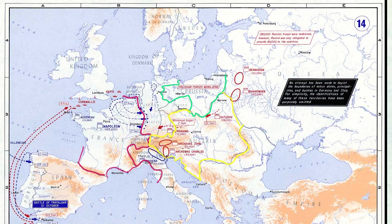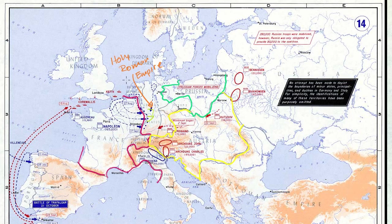A big difference between the world then and now was that there was no nation of Germany. You had a bunch of people speaking German, but they were divided into many small states — some under Austrian control, some under Prussian control. This loose confederation of German kingdoms and states was called the Holy Roman Empire. As Voltaire famously said, they were neither holy nor Roman — they didn't speak Latin, they weren't Italian, they were German. It wasn't controlled by a religious figure, and it wasn't a tightly controlled expanding empire — it was a loose confederation of kingdoms.